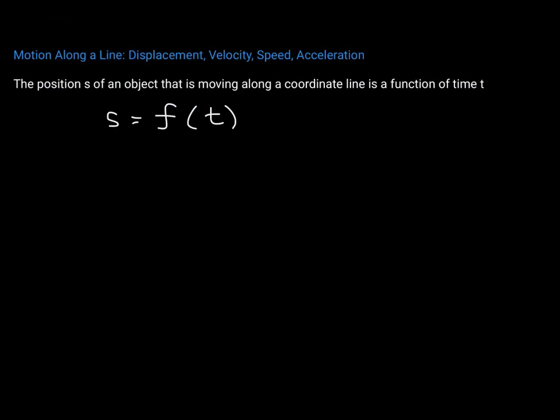We're going to get into some really fun applications, but we need to talk about motion along a line. We need to talk about what we mean by displacement, velocity, speed, and acceleration. A lot of times we use S to represent the position of an object moving along a coordinate line, usually an S-axis, either horizontal or vertical. S represents the position of an object, and the position is a function of time T. So we say S is f of T.